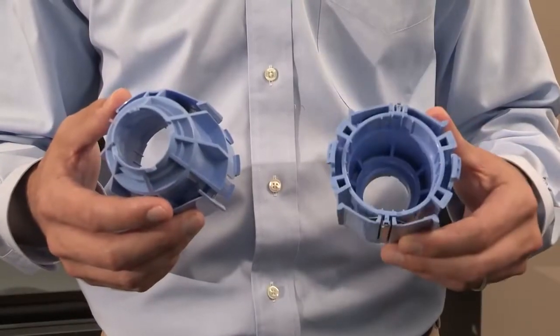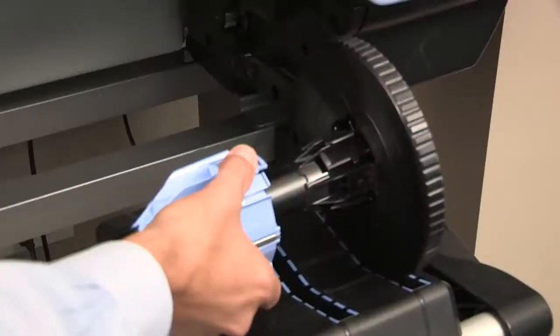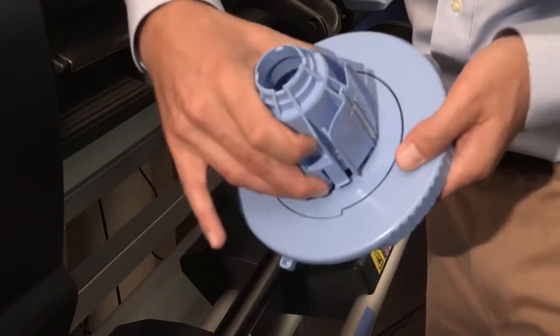Blue adapters like these should have come with your printer. Simply slide one onto the spindle and then lock it into place on the spindle hub. Then do the same with the other spindle hub.